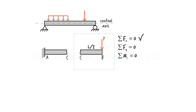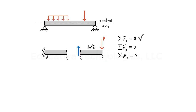But how do we satisfy the second and third equations? We have a downward force of P applied to the right end of the segment. Therefore, there must be an upward force at point C equal in magnitude to P in order for the sum of the forces in the y-direction to vanish. This upward force, labeled V on the diagram, is called the shear force. It is one of the internal forces in the beam.